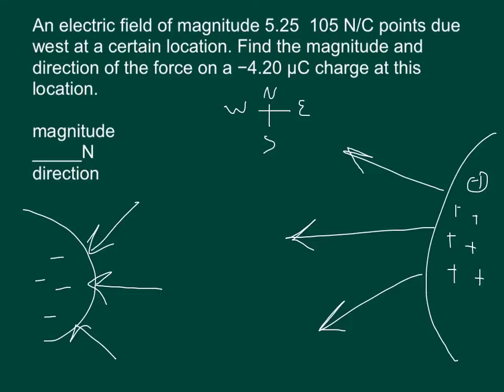Now to find the magnitude, we know that the electric field is defined as the force per unit of charge. And so the force is going to be equal to the charge times E, or the charge times the electric field. It just so happens that it gives us both of those numbers.